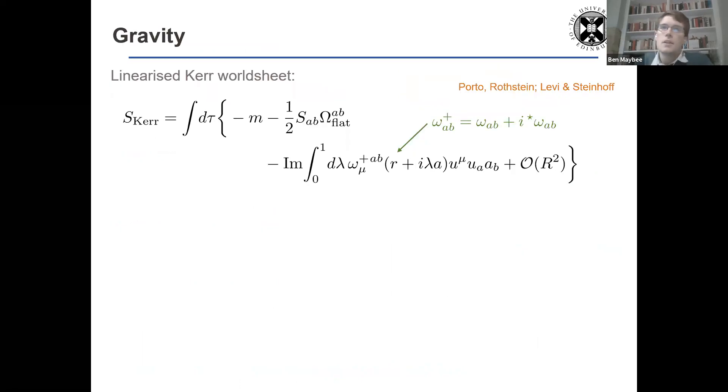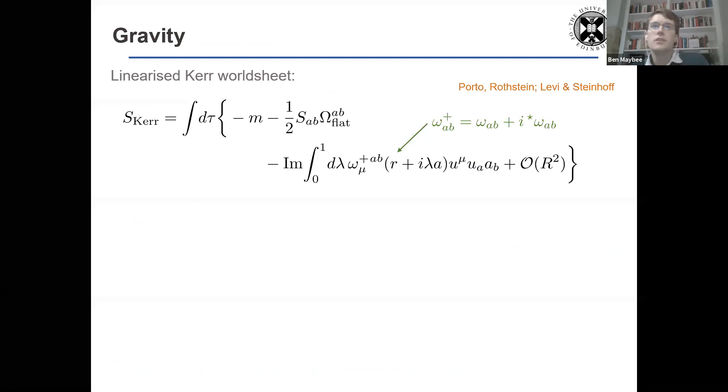Okay, so let's go to gravity. So I'm just going to look at linearized gravity. So this is the worldsheet form for Kerr. We've got now, rather than the field strength, we have the spin connection, the chiral combination of spin connections.